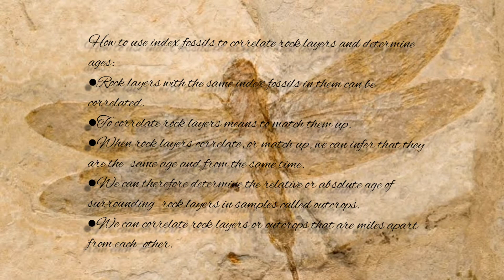How to use index fossils to correlate rock layers and determine ages: Rock layers with the same index fossils in them can be correlated — to correlate rock layers means to match them up. When rock layers correlate or match up, we can infer that they are the same age and from the same time period. We can therefore determine the relative or absolute age of surrounding rock layers in outcrops, and we can correlate rock layers or outcrops miles apart from each other.